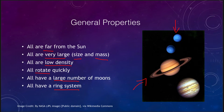Only Saturn's rings are pictured here, but Jupiter, Uranus, and Neptune all also have ring systems. Now, we differentiate between the giant planets — the Jovian planets — and the terrestrial planets, but even within the Jovian planets we see two distinct types.